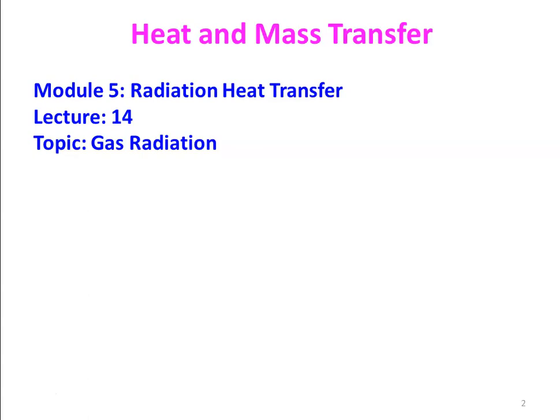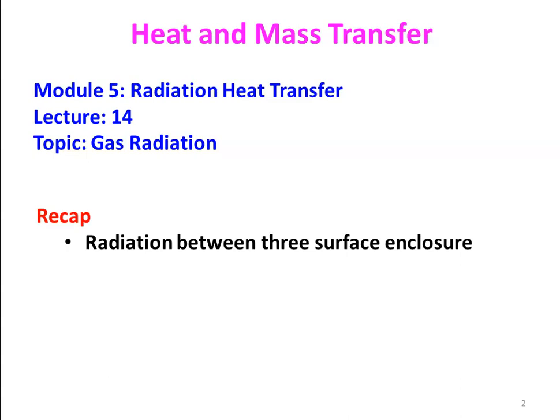Now we are going to discuss gas radiation — the radiation heat transfer in the case of a combustion chamber of an IC engine, combustion chamber of a boiler, and combustion chamber of a gas turbine power plant. Wherever combustion is taking place, there is heat transfer between the hot flame or hot gases and the metal surface. In the earlier lecture, we discussed heat radiation between a three-surface enclosure assuming one surface is re-radiating, but here we discuss gas radiation.